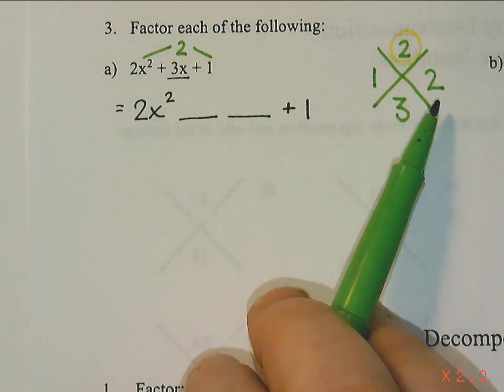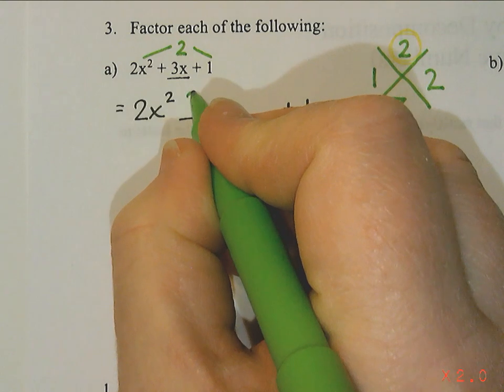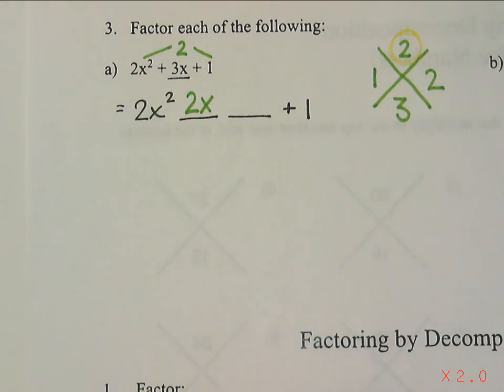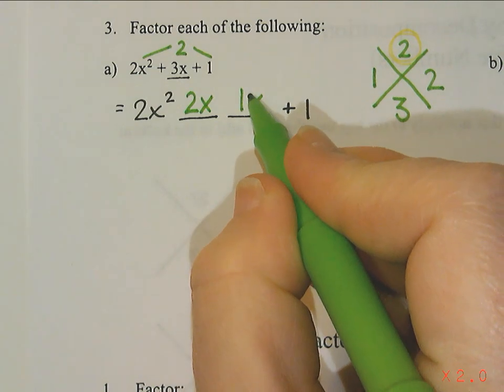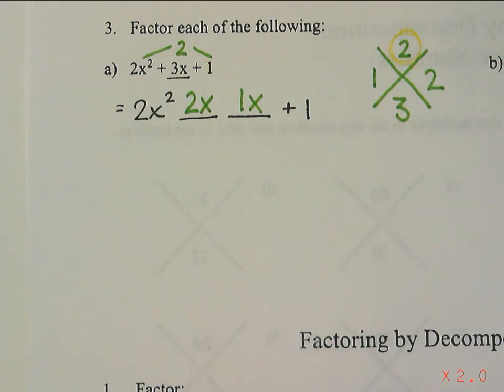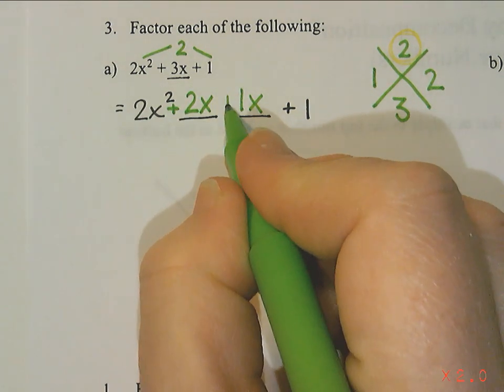Now it doesn't matter which one I put first. I usually try to pick one that I think would go nicely with the 2x². So I think the 2 would go a little bit better with the 2x² so I'm going to put the 2x first, and then I think the 1x is going to go a little bit better with the 1 so I'm going to put the 1x second. And then they're both positive so I'm going to put a plus sign in front of both of them.